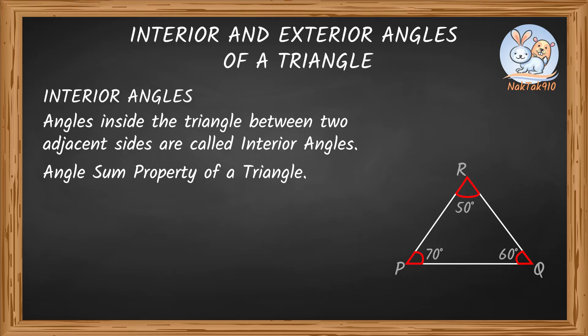Take a look at this triangle. I'll try to add the interior angles of this triangle PQR. Angle P equals 70 degrees, angle Q equals 60 degrees, angle R equals 50 degrees.